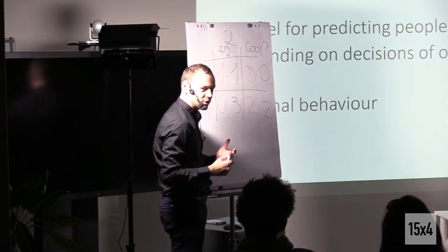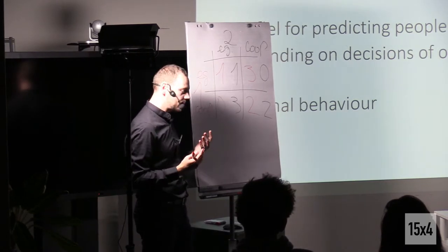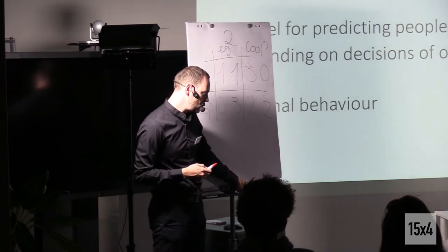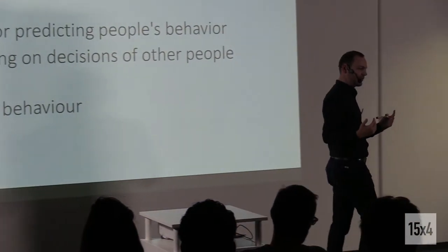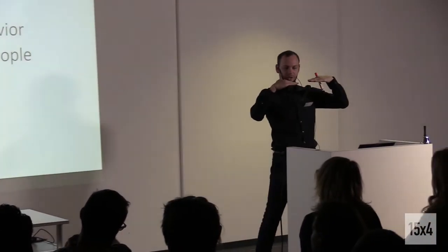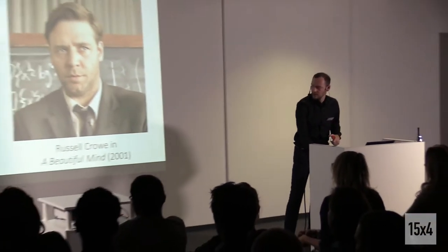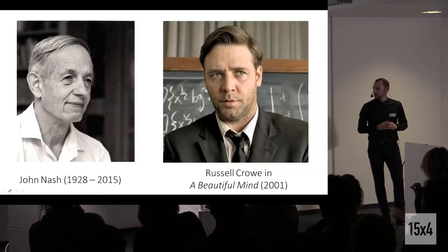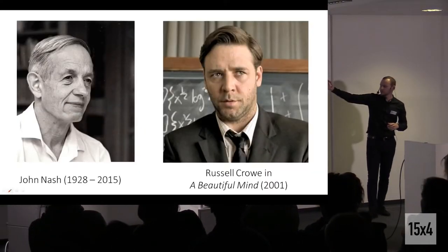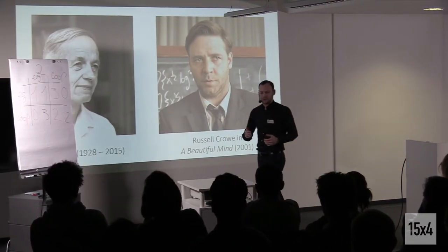Right? So now we have expressed our game in a matrix form, and now we need to make a prediction. How will they behave? And the most common way to do so is to find an equilibrium, because an equilibrium is a stable situation where nobody wants to change his position. In game theory, we call this a Nash equilibrium, because of this guy on the left, who was a mathematician and contributed a lot to game theory. You may know him by the movie Beautiful Mind, actually.